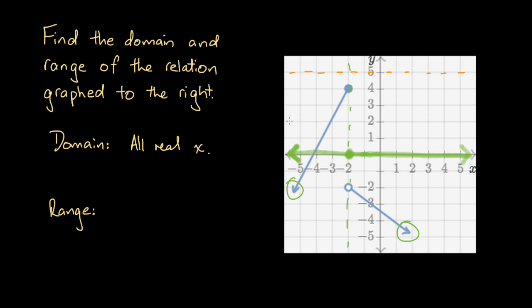So if we choose y equals 2 and we draw a dotted line, we see that it intersects with this part of this line, which means that if we input the x point x equals minus 3, we'd get the output of y equals 2.